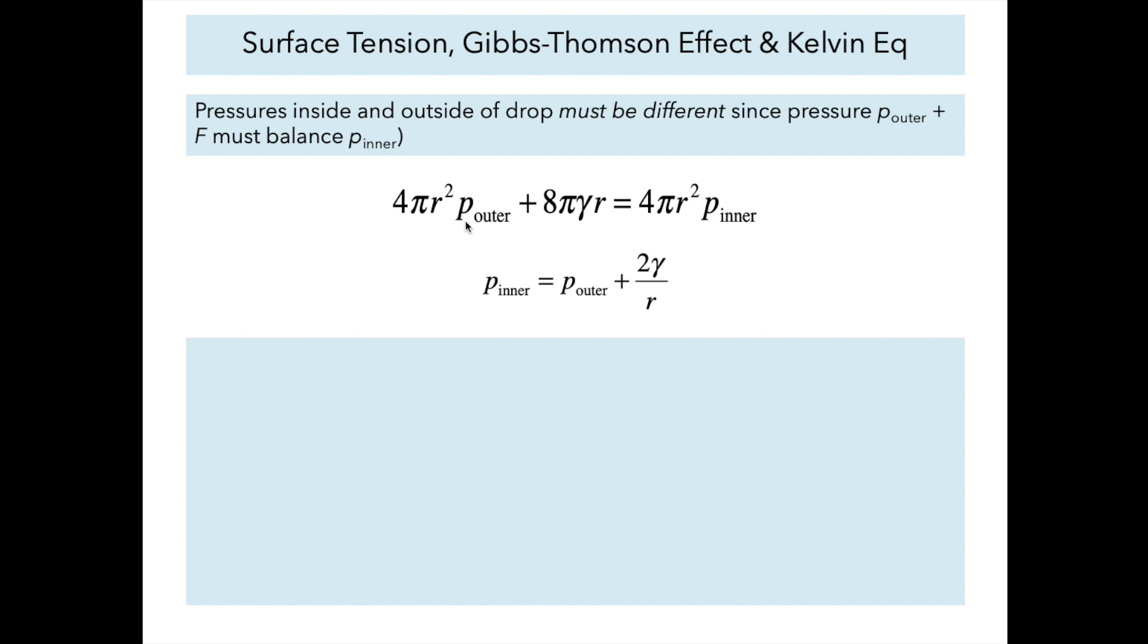We can write those down. Pressure being force per unit area, we multiply by the area over which the pressure acts. The inner pressure differs from the outer pressure because of this extra term involving the surface tension and the radius of the particle. The smaller the radius, the greater the pressure difference between the inside and the outside is.